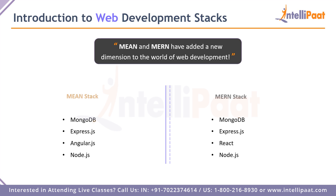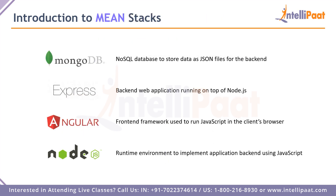MEAN and MERN are two tech stacks that have taken the world by storm. Whenever you talk to a full stack developer or someone in web development, they will know something about MEAN or MERN. Both are acronyms: MEAN involves MongoDB, Express.js, Angular.js, and Node.js. MERN is a little different — instead of Angular.js it makes use of React.js.